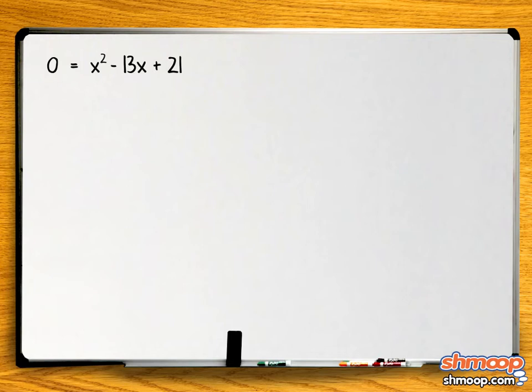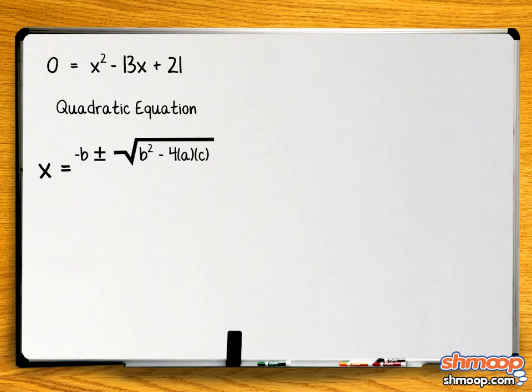Using the quadratic formula to solve for x, which is shown as x equals negative b plus or minus the square root of b squared minus 4ac, all over 2a.